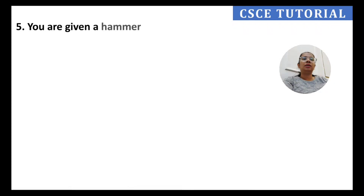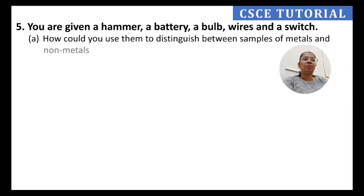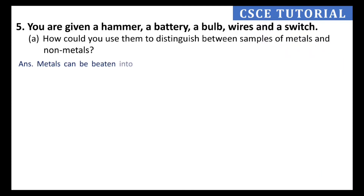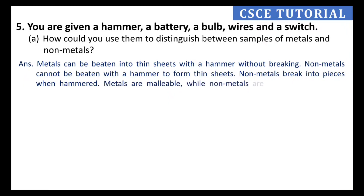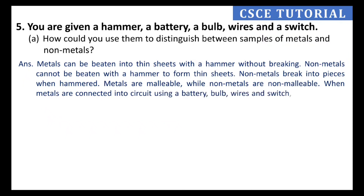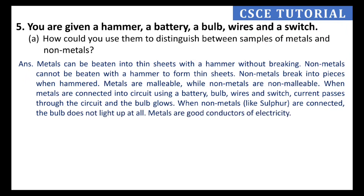Question 5: You are given a hammer, a battery, a bulb, wires, and a switch. How could you use them to distinguish between samples of metals and non-metals? Metals can be beaten into thin sheets with a hammer without breaking — they are malleable. Non-metals break into pieces when hammered — they are non-malleable. When metals are connected in a circuit using battery, bulb, wire, and switch, current passes and the bulb glows. Metals are good conductors of electricity. When non-metals like sulfur are connected, the bulb does not light up.